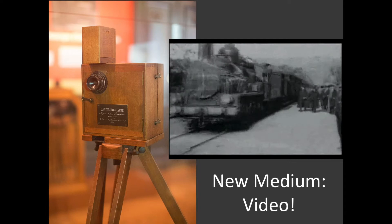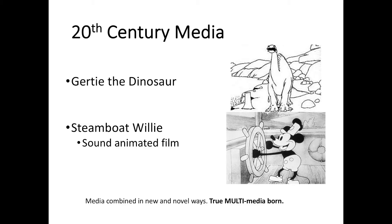And right in time for the 20th century, all five building blocks had arrived: text, images, audio, animation, and video. What started to change rapidly — very rapidly — was how we combined them in new and novel ways to express ourselves, and how we produced and consumed these novel forms of expression. We saw our first animated films like Gertie the Dinosaur and Steamboat Willie, which was the first cartoon to add sound. And it wasn't just cartoons either — sound was added to video, making the transition from silent film to talkies.